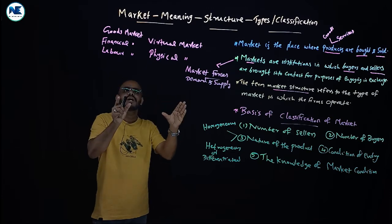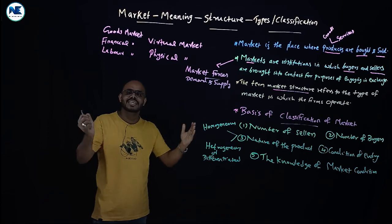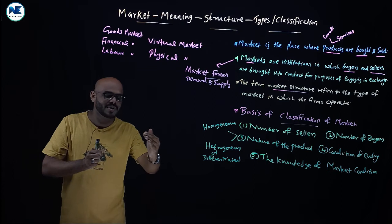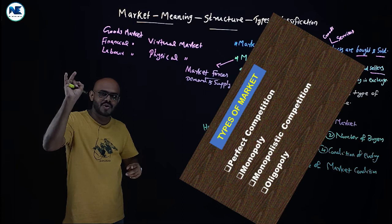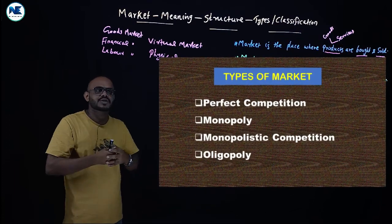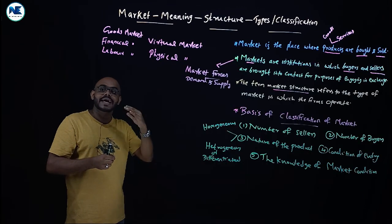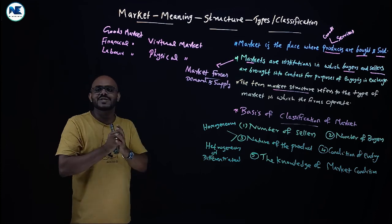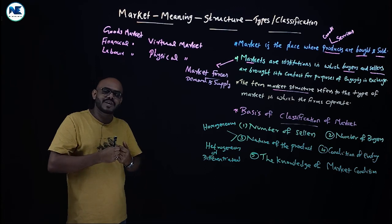To summarize, this video covered market meaning, market structure, and types or classification of market. In the coming videos, we will discuss market structures: perfect competition, monopoly, monopolistic competition, oligopoly, and after that oligopsony, duopoly, monopsony, bilateral monopoly, and so on. You must watch all these videos, make revisions, and make notes. All the very best — happy learning!